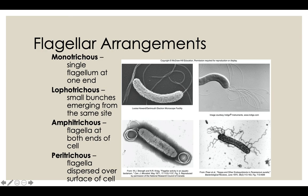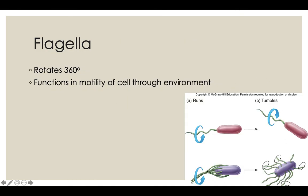Amphitrichous means one or multiple flagella on either end of the cell — you can see the bacteria in the middle with flagella on both ends. Either one or a couple of flagella on each end qualifies as amphitrichous. Peritrichous — 'peri' meaning around — has flagella found all around the entire cell surface. The entire cell is covered in flagella.